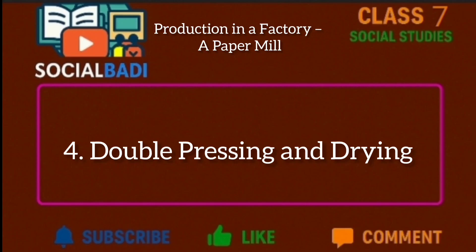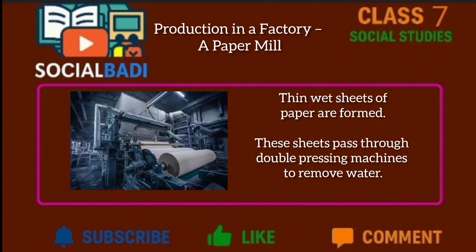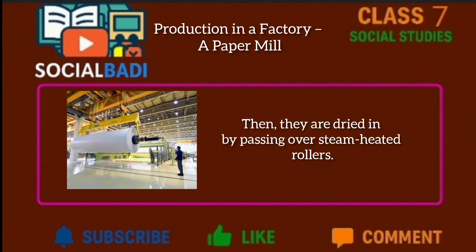Pressing and drying: The pulp is spread on wide moving screens where excess water drains out, forming thin wet sheets of paper. These sheets pass through double pressing machines to remove water, then they are dried by passing over steam-heated rollers.